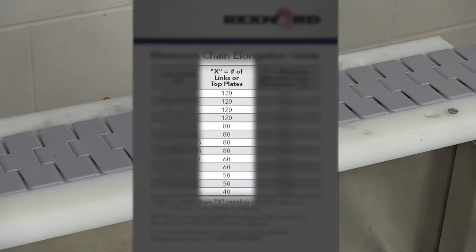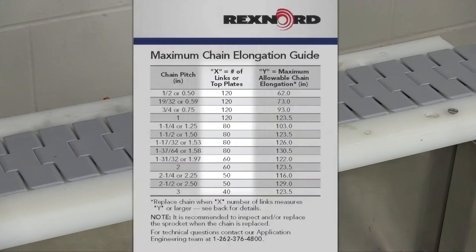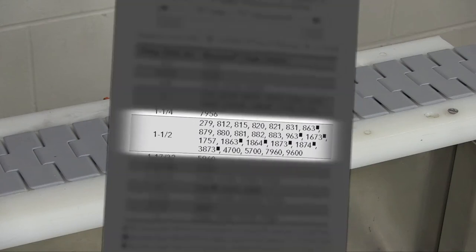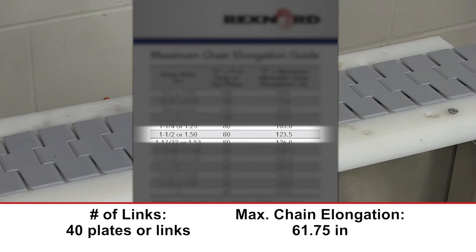Next, refer to the table to see how many top plates to measure. In this video, we are comparing the 882 series and will measure 40 plates due to the smaller length of chain available.